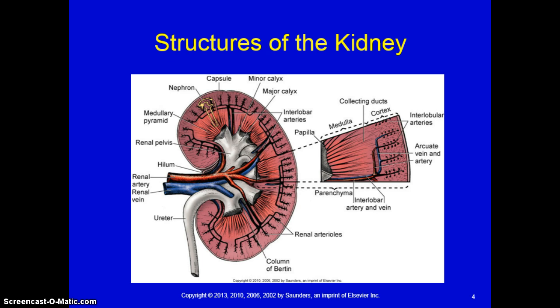The renal columns are cortical tissue that dips down into the interior of the kidney and separates the pyramids. You can see that information in the pictorial view on the right, which is also figure 68-2 in your text.